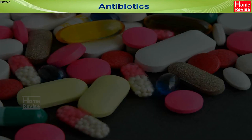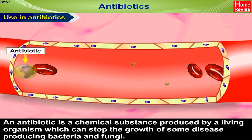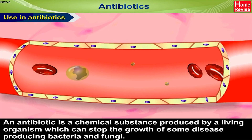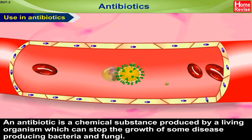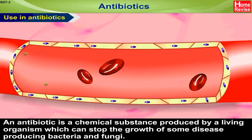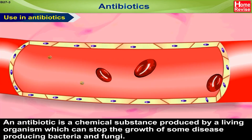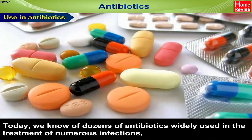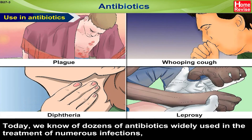Antibiotic Use in Antibiotics. An antibiotic is a chemical substance produced by a living organism which can stop the growth of some disease-producing bacteria and fungi. Today we know of dozens of antibiotics widely used in the treatment of numerous infections.